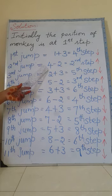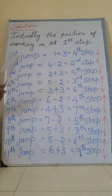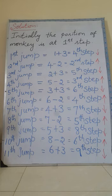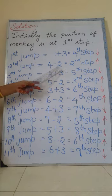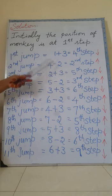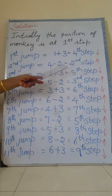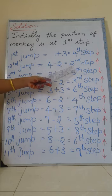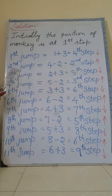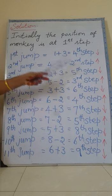Second jump: the position of the monkey is now at the fourth step, and then he jumps two steps back. Four minus two equals two. So the position after the second jump is the second step — move back.